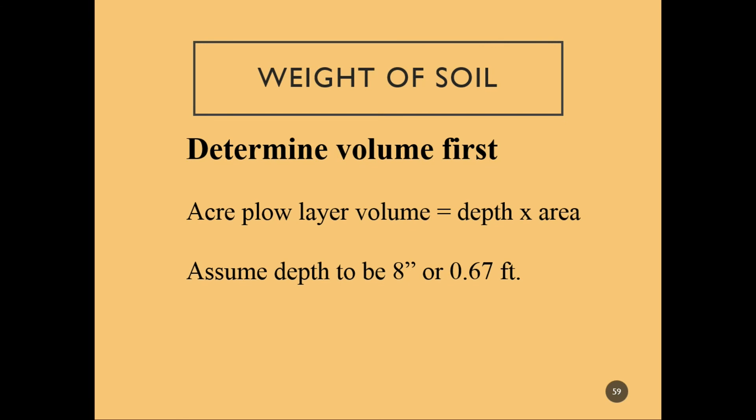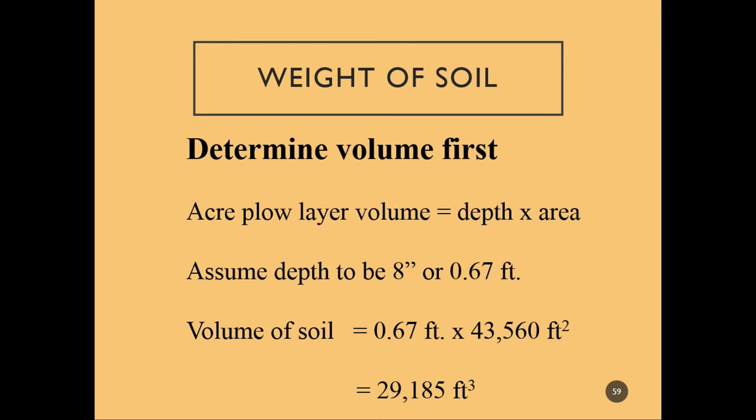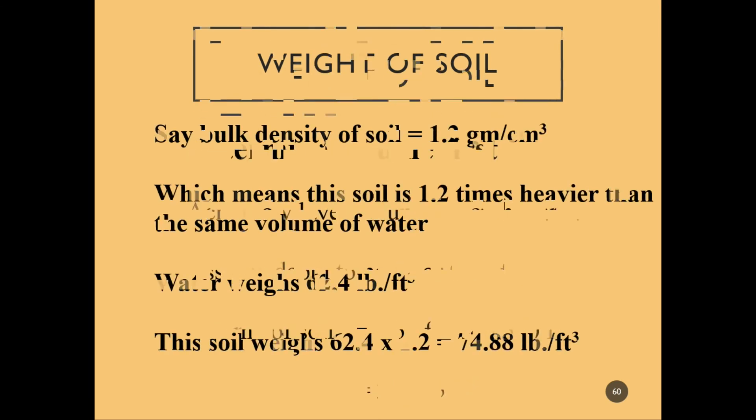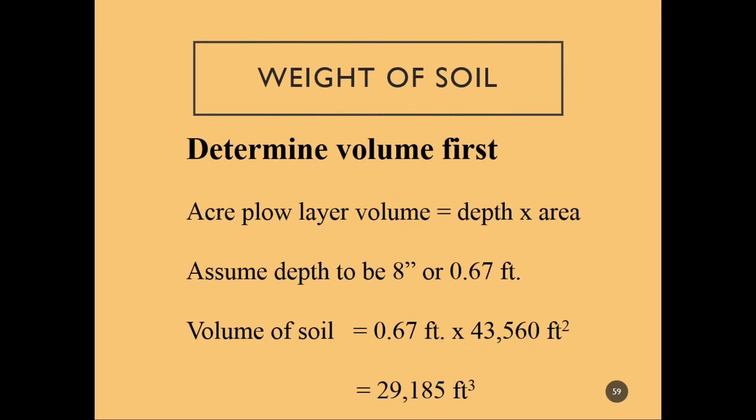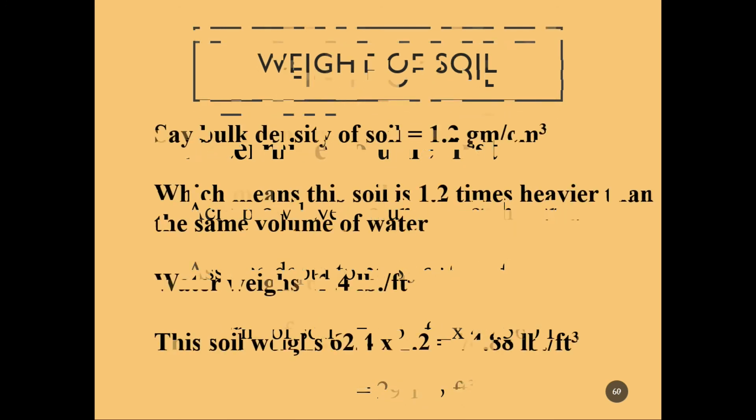Determining the weight of soil: the acre plow layer volume equals depth times area. We assume a plow layer of about 8 inches or 0.67 feet, so the volume of soil in an acre is about 43,560 square feet times the assumed depth, giving a volume of about 30,000 cubic feet.